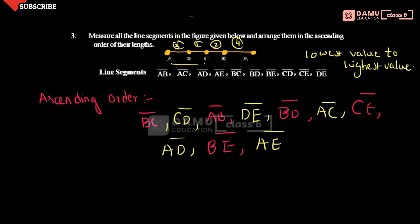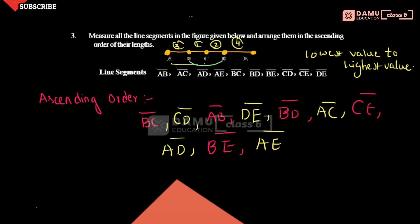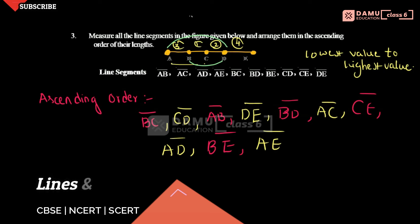So here, BC is smaller than CD, which is smaller than AB, which is smaller than BE. Then two smaller segments were added to get BD. Then one more small segment is added to get AD. Then AC covers two smaller segments. Then CE. Then AD again from A to D, then B to E, then A to E. Like that, the segments were added together.